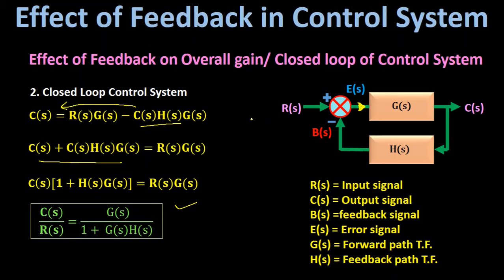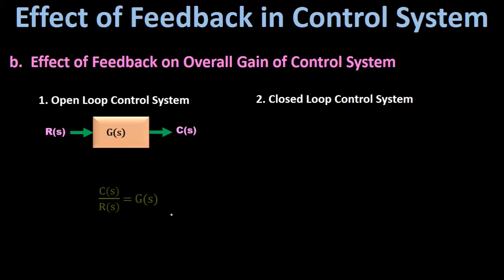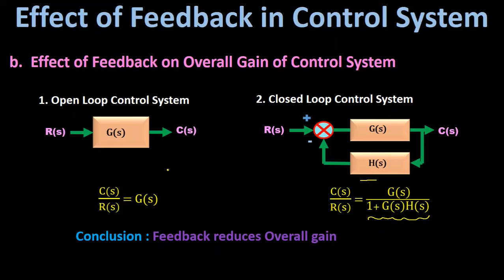Comparing the results: for an open loop control system the overall gain is C(s)/R(s) = G(s), while for a closed loop control system it is G(s) / [1 + G(s)·H(s)]. When we compare both results, the overall gain is reduced by a factor of 1 + G(s)·H(s). Therefore we can say that feedback reduces the overall gain of the system.